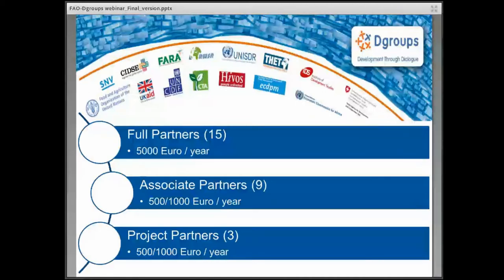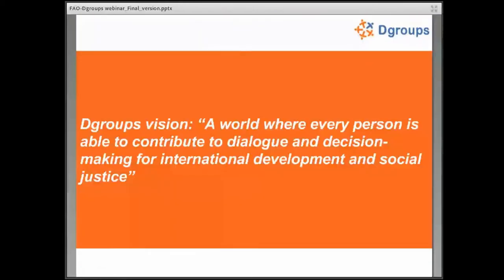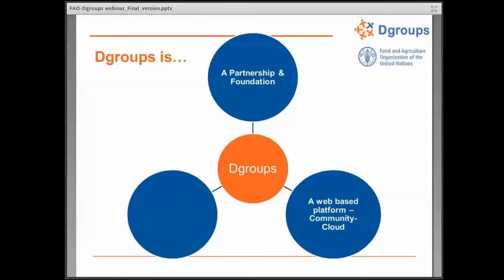You'll see these different membership options and the different fees and rights that come with them. If anybody's interested in the differences between the partnership options, that information is on the dGroups information page, which we can share after this webinar. Basically, what we all come together around is this dGroups vision of a world where every person is able to contribute to dialogue and decision-making for international development and social justice, so that information is shared much more broadly, rather than remaining in technical or organizational silos within our sector.